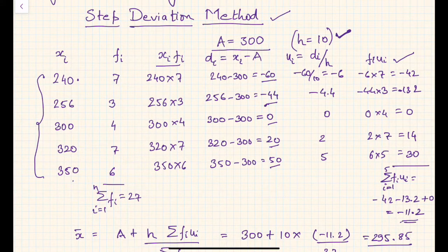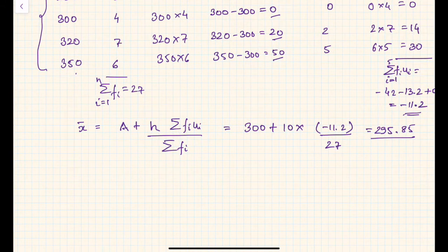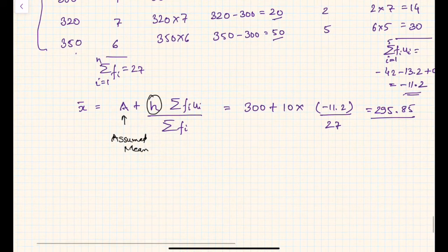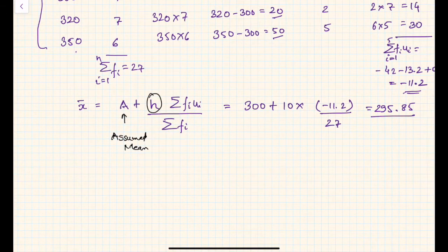If you see how I have calculated fi*ui, it becomes much simpler, and then I have summed all these fi*ui values to get minus 11.2. Now the formula for x̄ is: x̄ = a (assumed mean) + h × (Σfi*ui / Σfi). If you deploy the values in this formula you will again get 295.85.